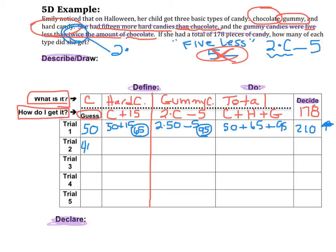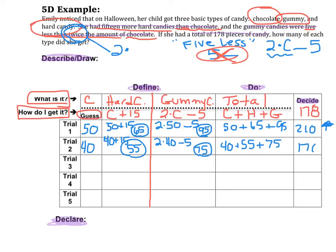I'm going to go with 40, because it's still a nice number to work with and it's less than 50. If there were 40 pieces of chocolate, 40 plus 15 is 55 pieces of hard candy. Twice 40 is 80, and 5 less than that is 75 gummy candies. Then 40 plus 55 plus 75 is 170. That's too low, but it's good information — I'm really close, so it's closer to 40 pieces of chocolate than 50, but a little bit more. Let's go with 42.